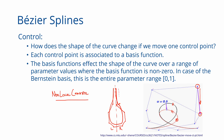Can you change the control polygon and only modify one part of the curve without affecting the rest? Well, that is not possible, because the moment you move a control point the entire curve is going to shift because of this property of non-local control.